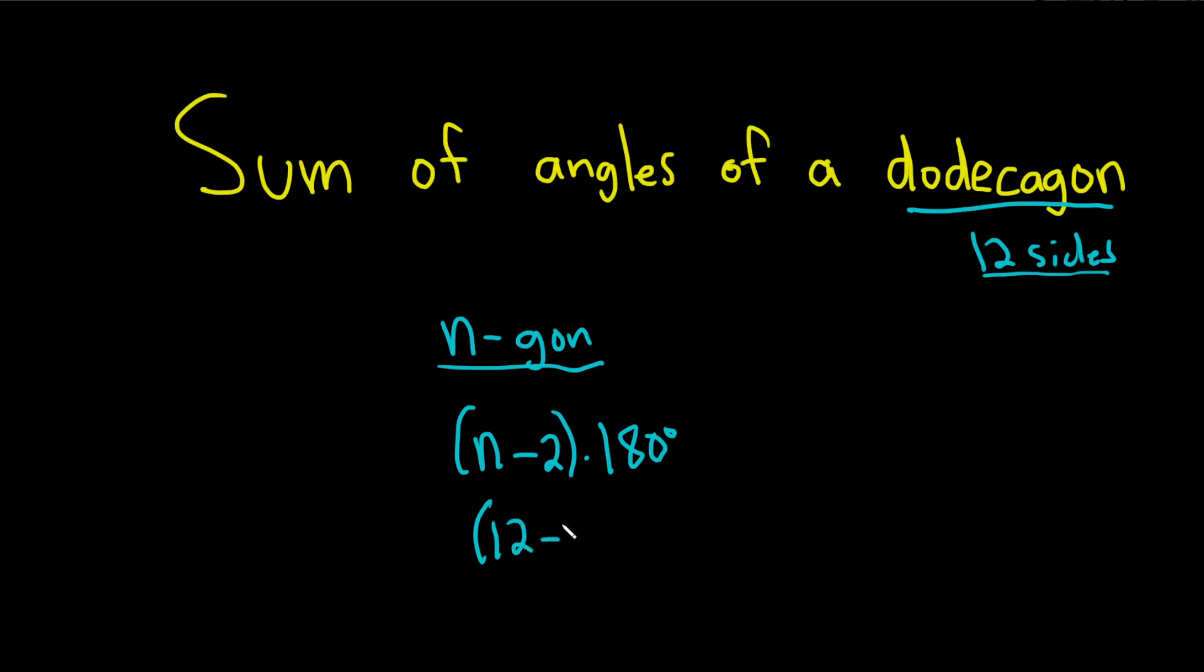So it's 12 minus 2 times 180 degrees. So that's 10 times 180 degrees, and then when you multiply by 10, you just add a 0. So it'll be 1,800 degrees.